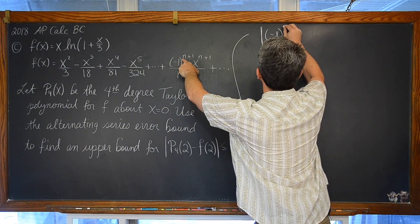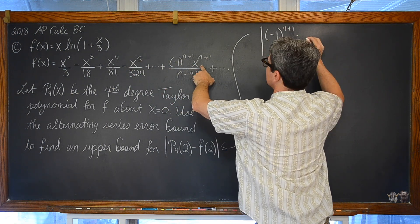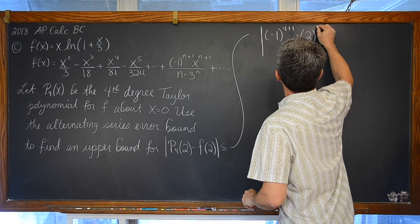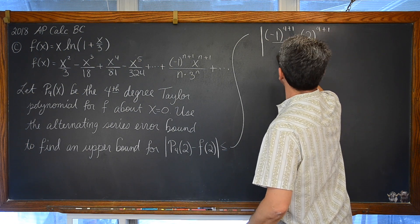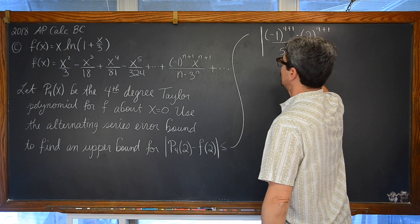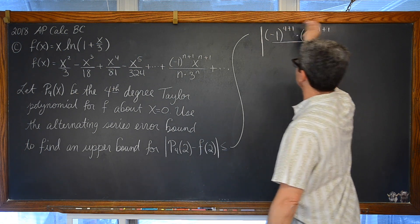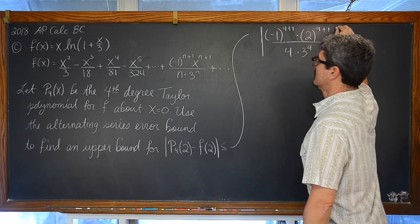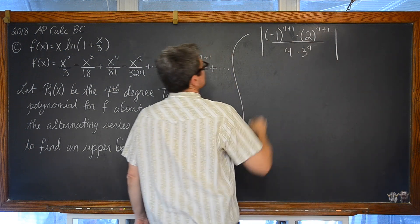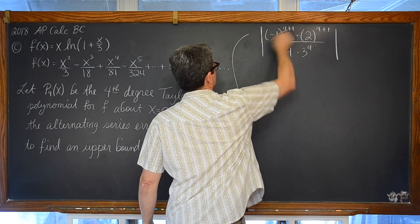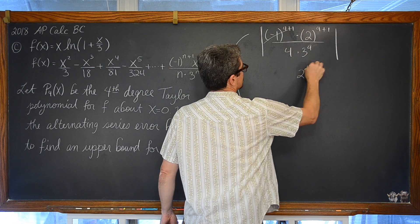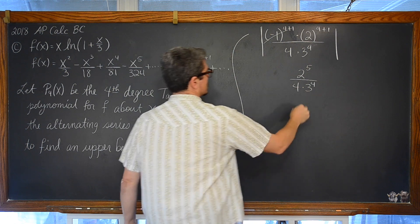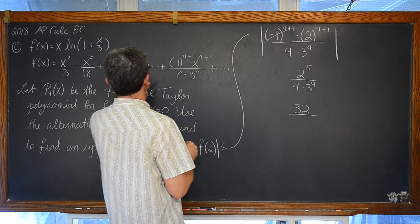We are looking at negative 1 to the (4+1) power times x, and we are looking at an x value of 2, so 2 to the (n+1) over n — which is 4 — times 3 to the fourth power. That negative 1 term cancels out in absolute value, so we are looking at 2 to the fifth power over 4 times 3 to the fourth, which gives us 32 over 324.